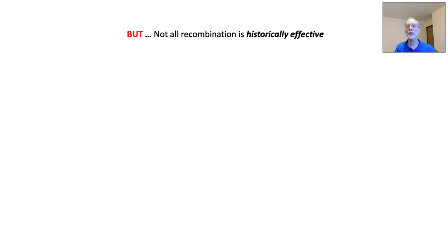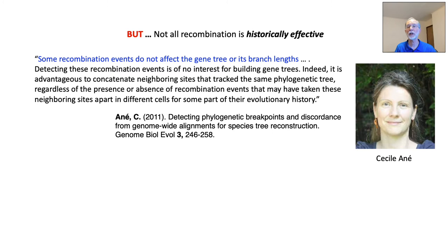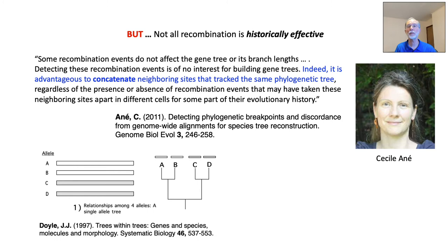But the key point is that not all recombination is relevant. It must be what I call historically effective. This is something that many authors have pointed out over the years. Here, for example, is a quote from Cecile N.A.: some recombination events do not affect the gene tree or its branch lengths. Indeed, she continues, it is advantageous to concatenate neighboring sites that have the same history. To see what she means, here is the earlier example I showed. But this time, instead of modeling a recombination event between alleles A and C, which are non-sisters on the tree, we follow a recombination event between sister alleles A and B. Clearly, this has no effect on the topology.